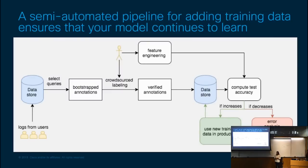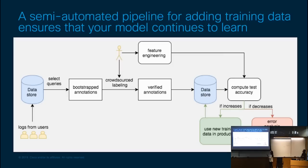We can create a semi-automated pipeline in production to speed up the process of selecting queries and adding them to the training data. Raw logs coming in from users go to a central data store. We then use active learning and model uncertainty metrics to intelligently select queries to annotate. These queries are run through our current models to generate bootstrapped annotations, which are then sent to Mechanical Turk or other crowdsourcing workers to either accept, reject, or update the annotations and verify correctness. After this, we have clean verified annotations that we can add back to our training data. We then automatically compute the test or validation accuracy, and if the accuracy increases, we can automatically add it to our production model and deploy.